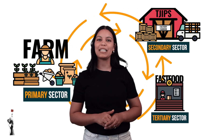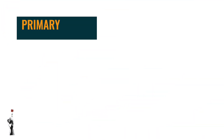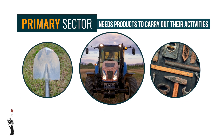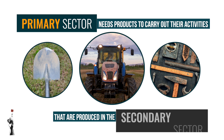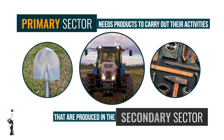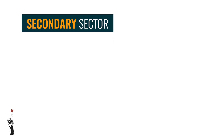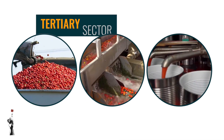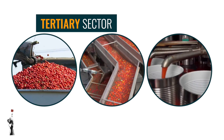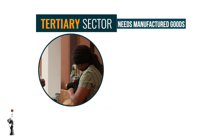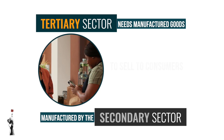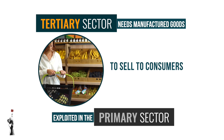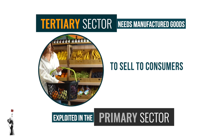Let's dive a little bit deeper into this concept. The primary sector needs products such as tools, machines or vehicles that are produced in the secondary sector to carry out their activities. The secondary sector requires raw materials from the primary sector to produce their goods for the tertiary sector. The tertiary sector needs manufactured goods from the secondary sector to sell to consumers, or even different types of primary sector products such as fruits and vegetables.